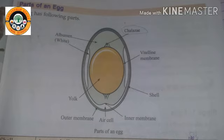Next we see albumen. The egg white is known as albumen. Eggs ka jo white hota hai use hum albumen kehte hain. It contains about 40 different proteins. The main component of egg white, in addition to water, is protein. Jab aap ek egg ko break karenge, to usmein se jo white color ka thick liquid aata hai use hum albumen bolte hain.